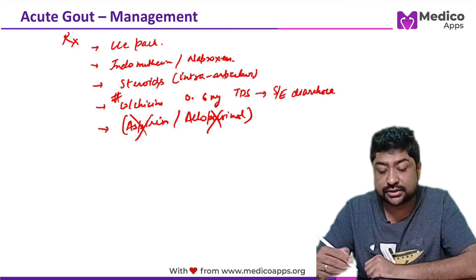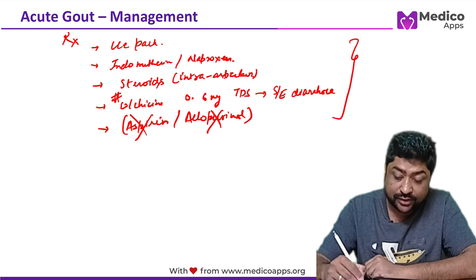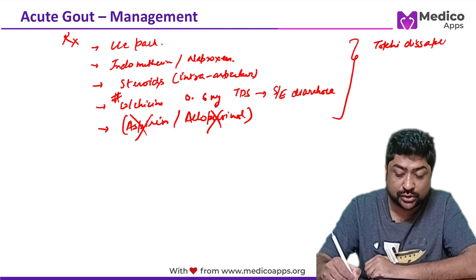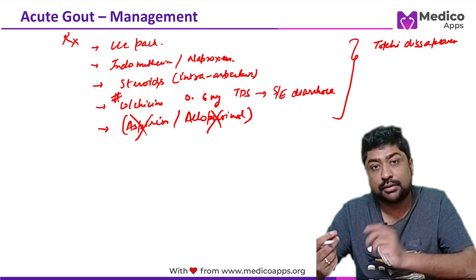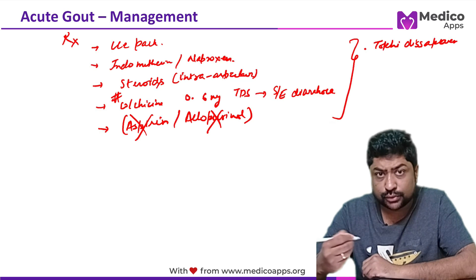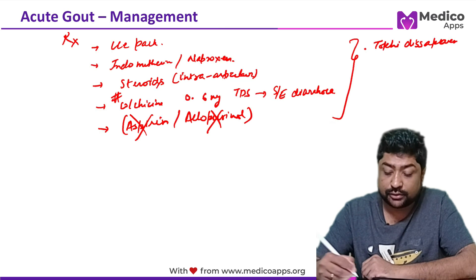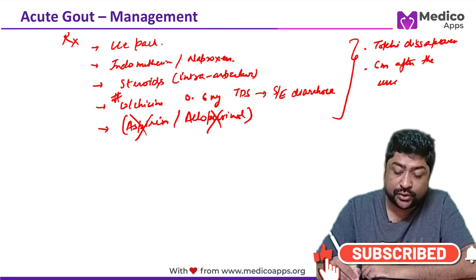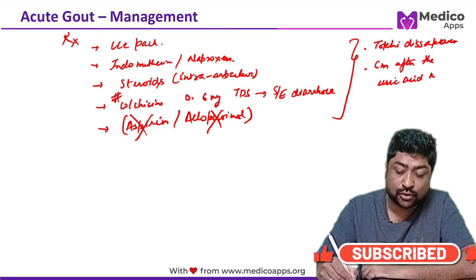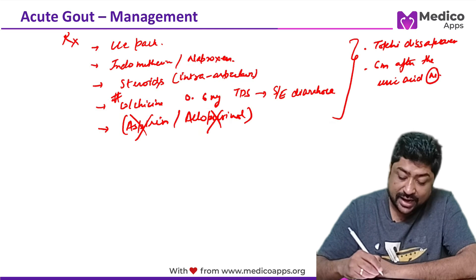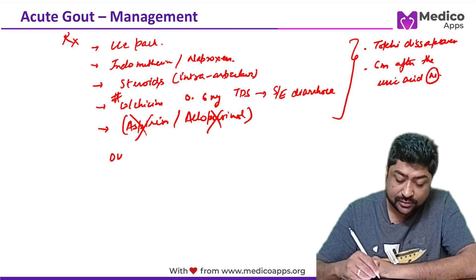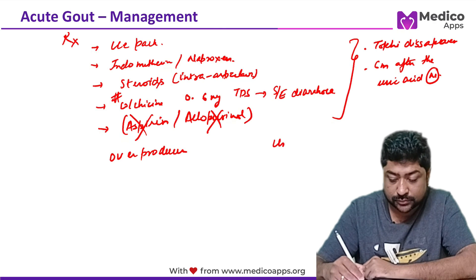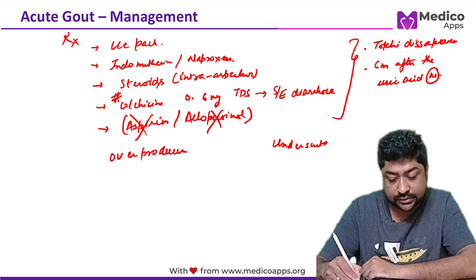Regarding duration of treatment: drugs should be continued until all TOFI disappear — TOFI are soft tissue deposits of uric acid — or 6 months after uric acid levels become normal. This depends on whether the patient is an over-producer or under-excretor.